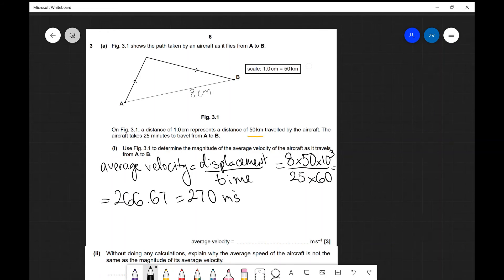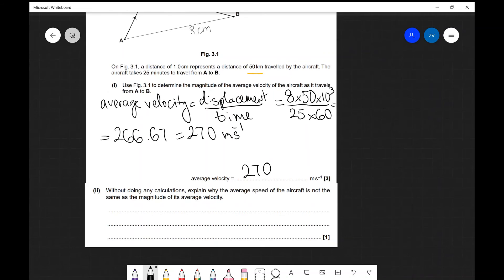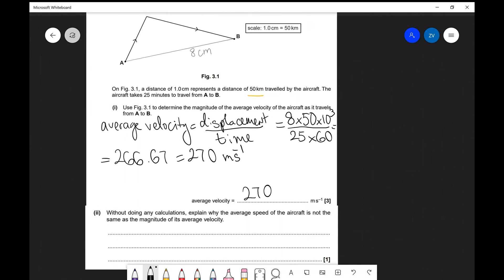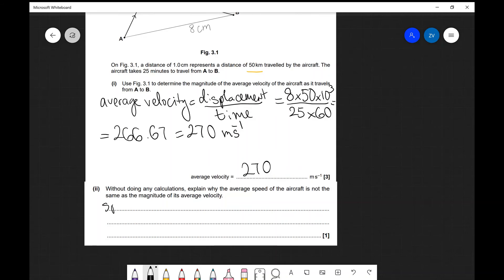Which let's put that up to two significant figures for this question which would be 270 meters per second for the average velocity. Now without doing any calculations explaining why the average speed of the aircraft is not the same as the magnitude of its average velocity.